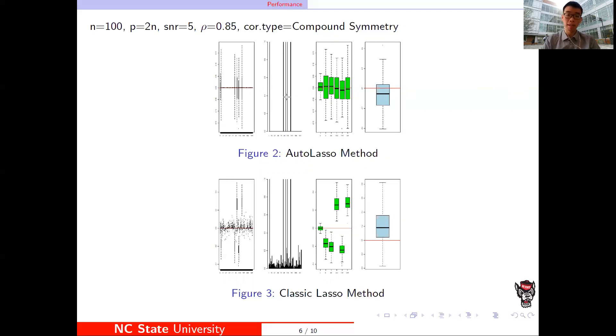The second part is the correct selection. You can see here the classical Lasso method selects a lot of variables, but the AutoLasso method only selects exactly five variables.